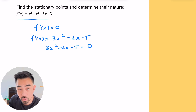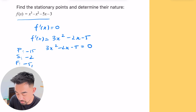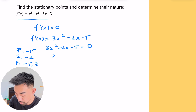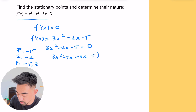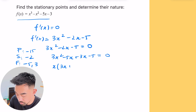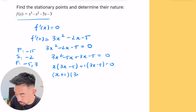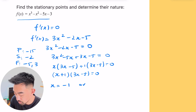It's a quadratic, so let's PSF it. My product is 3 times minus 5, which is minus 15. Sum is minus 2. My factors will be minus 5 and 3. So 3x² minus 5x plus 3x minus 5 equals zero. Factorizing in pairs: x outside of (3x minus 5), plus 1 outside of (3x minus 5) equals zero. So x plus 1 times (3x minus 5) equals zero, giving x equals minus 1 or x equals 5/3.